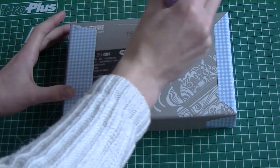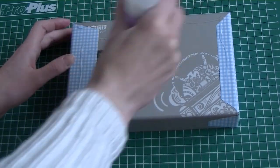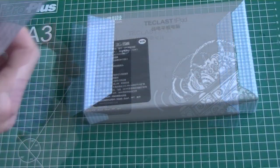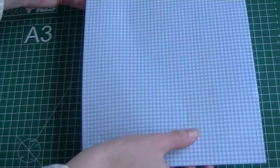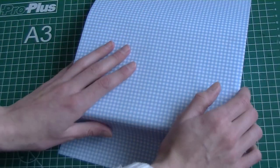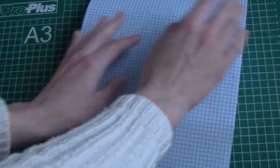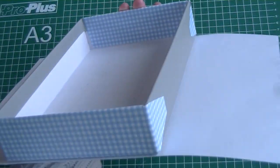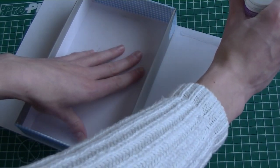Add glue to the bottom of the box and place the paper. Then add glue to the extending parts and fold them so they stick to the box.